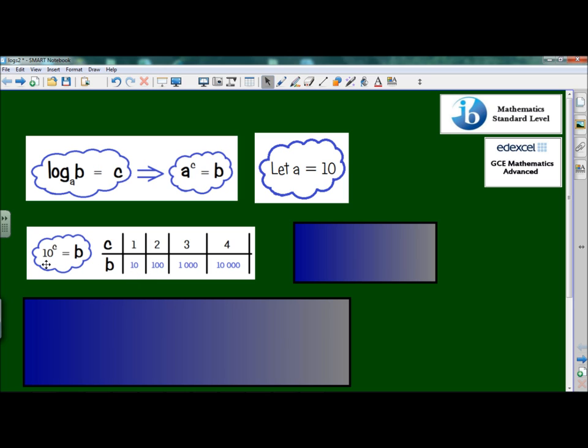Well, let's just see if we agree with them. 10 to the power of 1 is equal to 10. Yes, that seems fine. 10 squared, 100. 10 cubed is equal to 1,000. And 10 to the power of 4 is equal to 10,000.